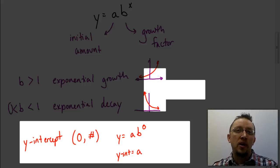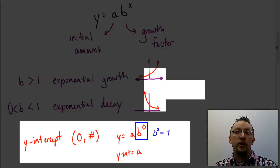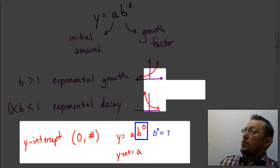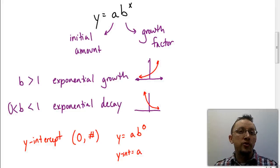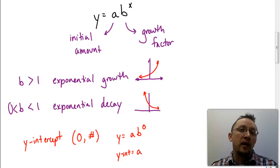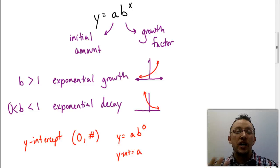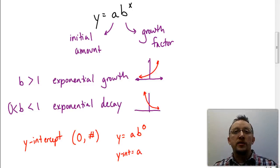The y-intercept is a coordinate where x is zero and y is some number. If I put zero in for x in that equation, b to the zero power is one — anything to the zero power is one. So that means your y-intercept would just be a. Using these pieces is going to make graphing a lot easier. If I know the y-intercept and the shape of the graph, it helps me pick coordinates to get a good picture of what the graph looks like.